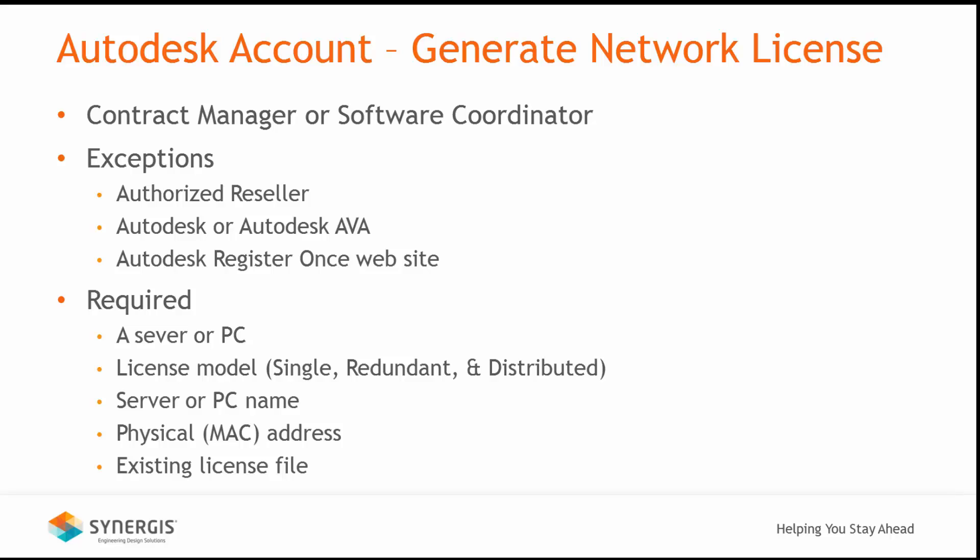Only those who have been assigned the contract manager or software coordinator role have the ability to do this, but there are some exceptions. For example, your authorized Autodesk reseller can generate the license file, as well as Autodesk or through the Autodesk Virtual Agent. In addition, anyone having an Autodesk account associated to your subscription or contract can generate a license file through the Autodesk Register Once website. The factors of generating a license file are basically having a server or PC, what license model type you're going to use, and the name and physical address of the server or PC holding the license manager and license file. If you already have an existing license file, it could be useful in collecting the necessary data to generate the new license file.